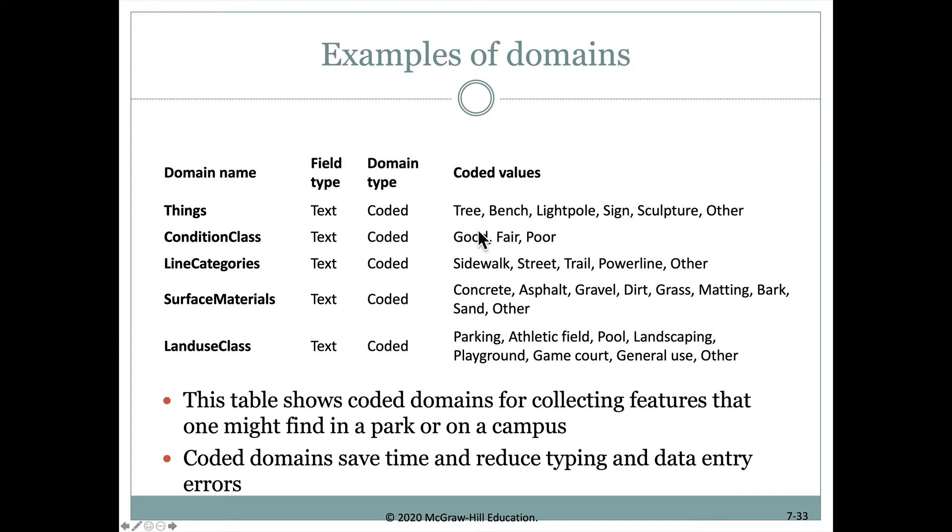Here are some examples of domains. The condition class could be good, fair, or poor. The line category could be a sidewalk, street, trail, power line, or other. We often include 'other' in case something is not indicated by one of the other choices. By setting up such coded domains, it makes it easy for the person collecting data to select something, reduces typing time, decreases data entry errors, and does all sorts of good things like that.